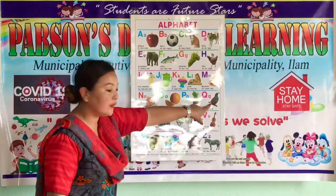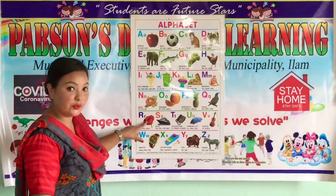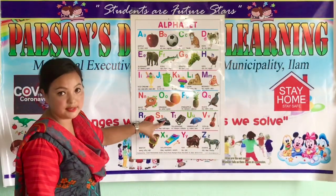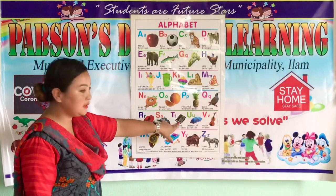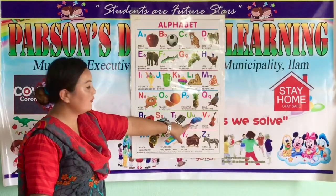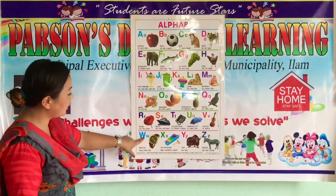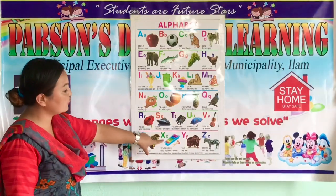Q for Coil. R for Roads. S for C. T for Telephone. U for Umbrella. V for Bison. W for Watch. X for Chilophone.